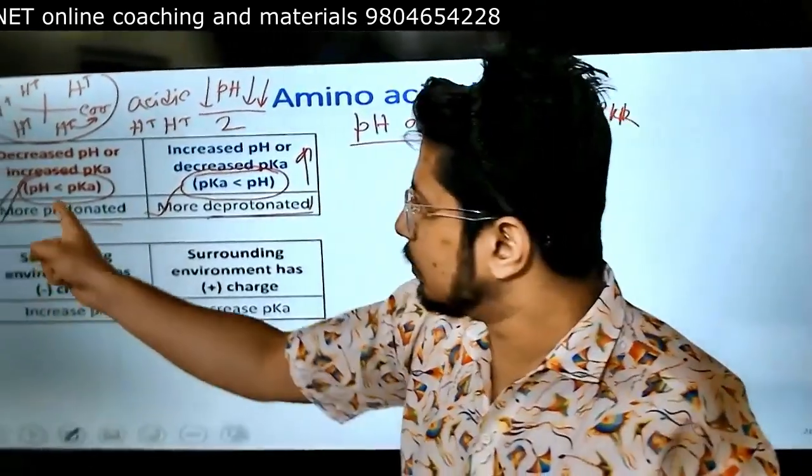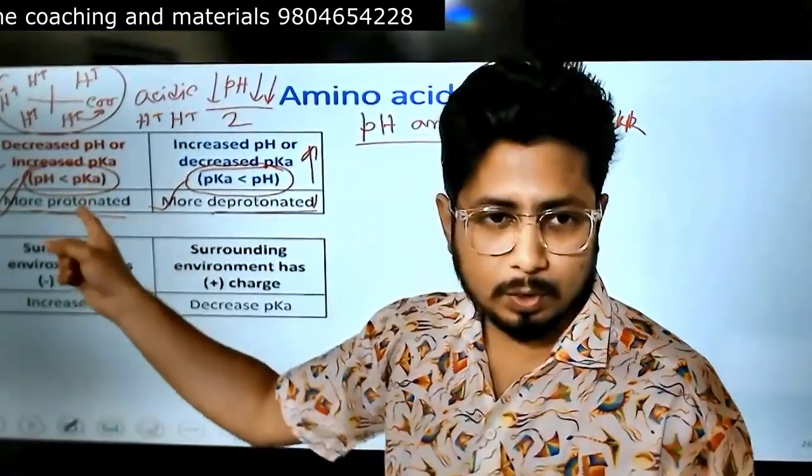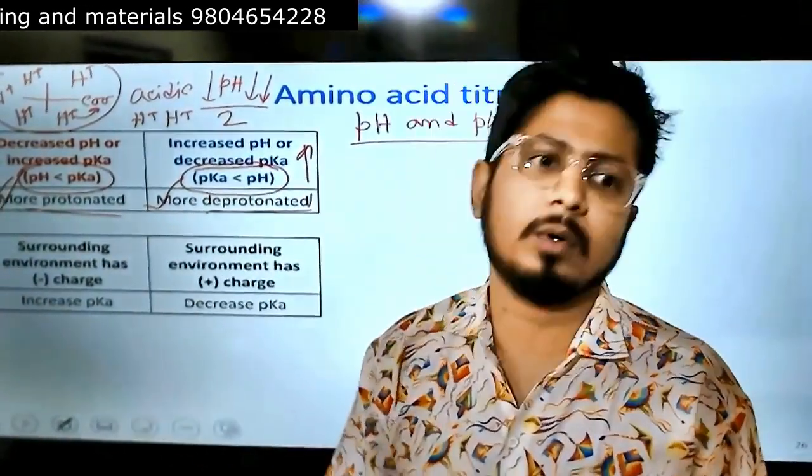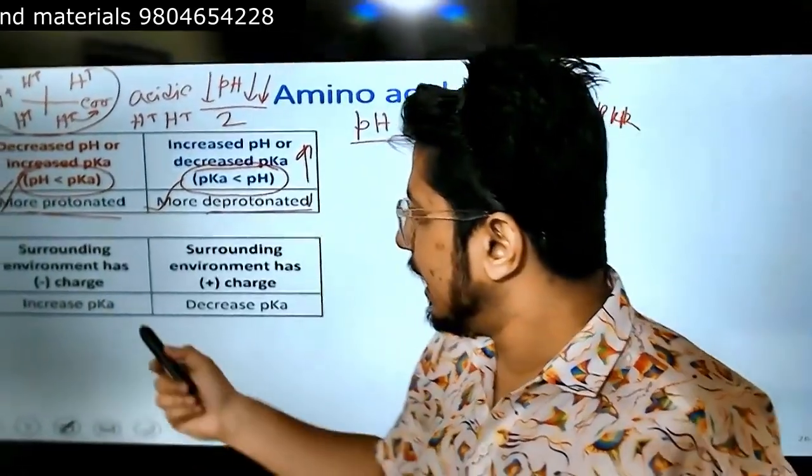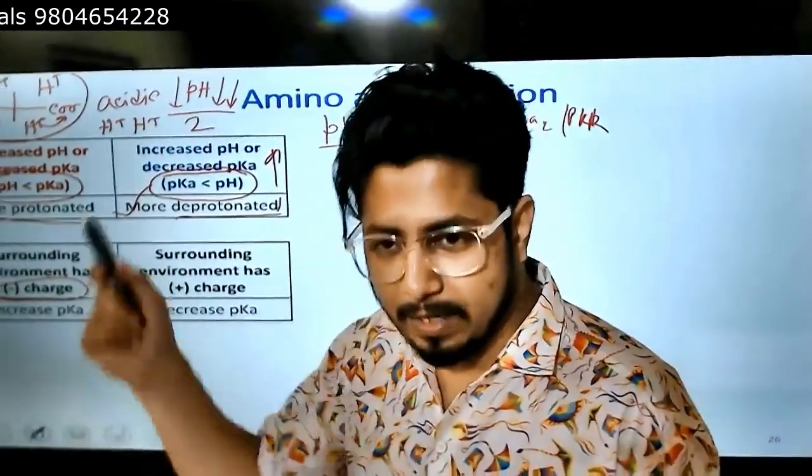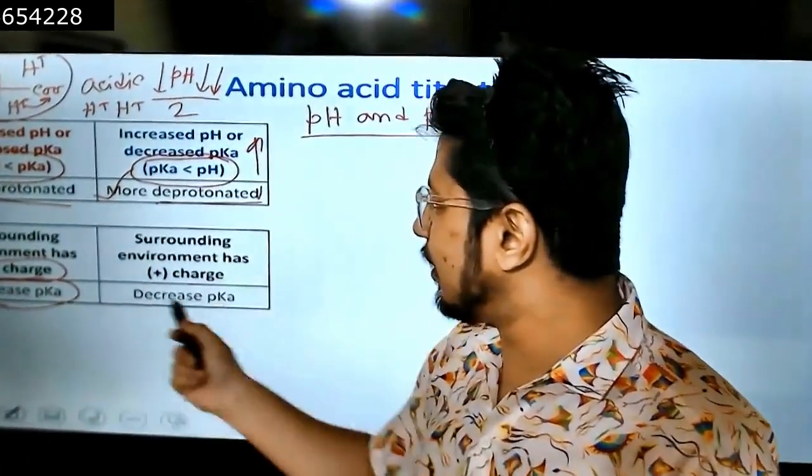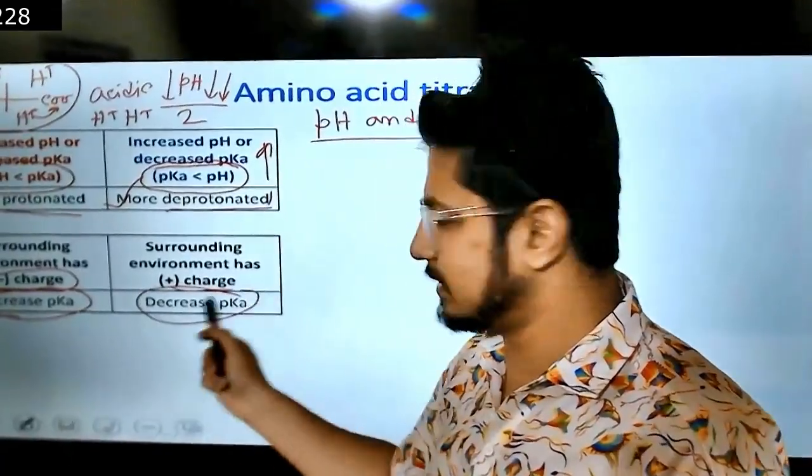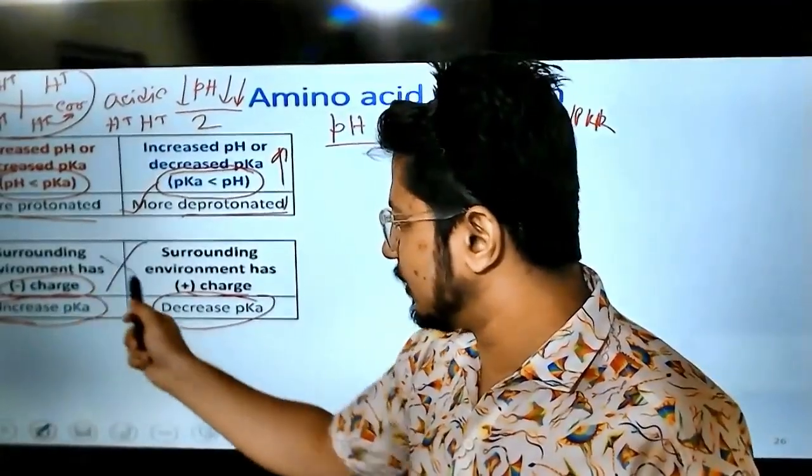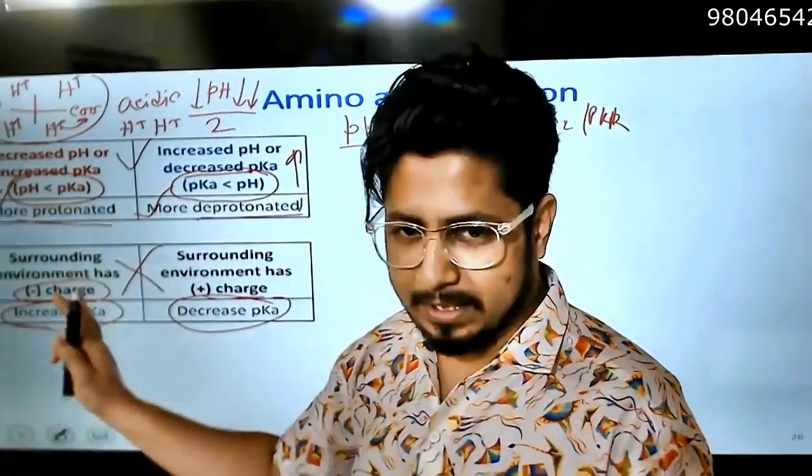Just remember one thing. pH is less than pKa means acidic pH, more protonation. You don't need to mug it up. Acidic pH means more proton is present, so more protonation. As simple as that. Now surrounding environment has negative charge.